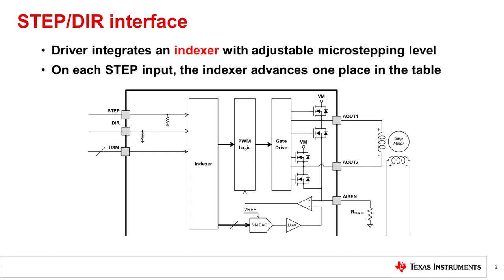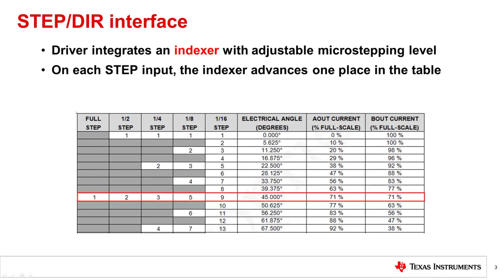Integrated stepper drivers with a step direction interface contain an indexer table that determines what current level to regulate in each stepper winding. The current level at each step in the indexer table is a percentage of the full scale current. Full scale current is the maximum current the stepper driver will regulate in the motor windings. Typically a reference voltage, internal or external to the stepper driver, sets the full scale current.